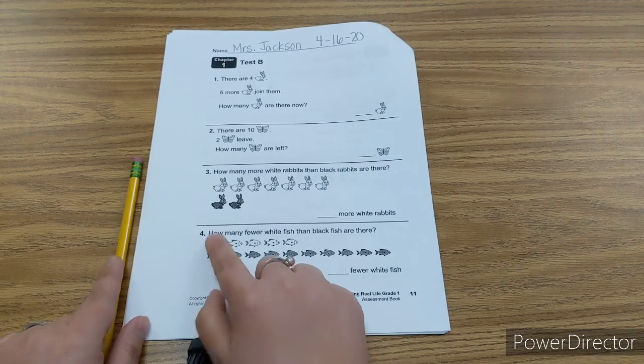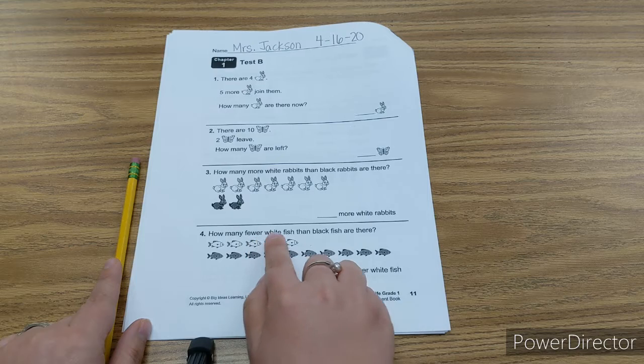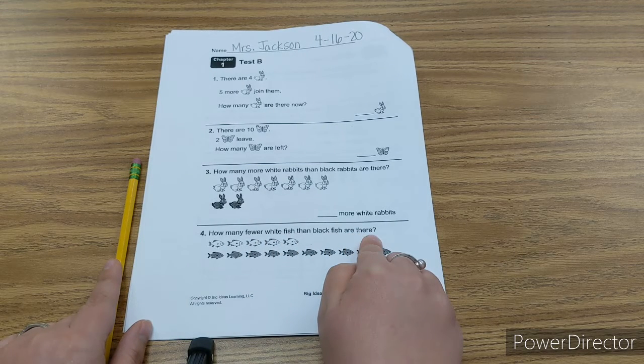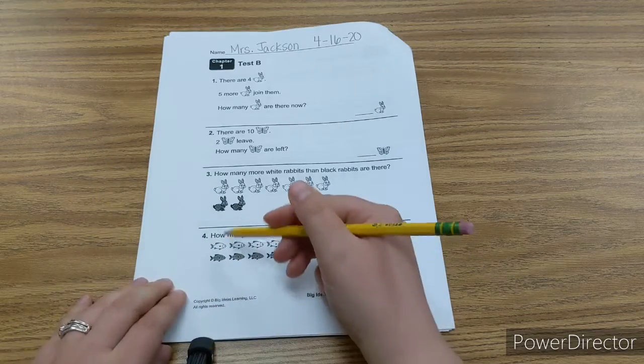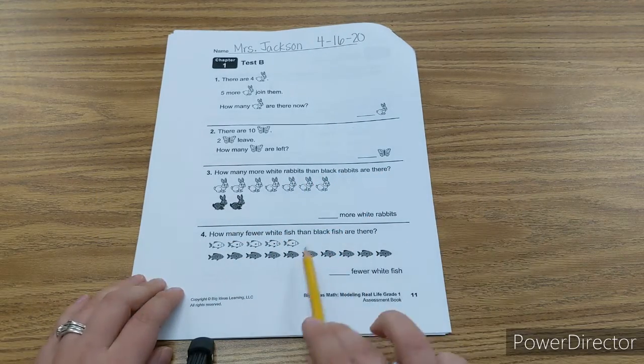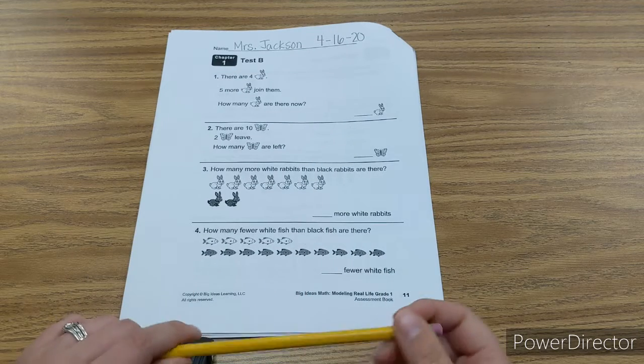Number four. How many fewer white fish than black fish are there? So again, you're going to do your one-to-one cross outs, and you're going to see how many fewer white fish you have.